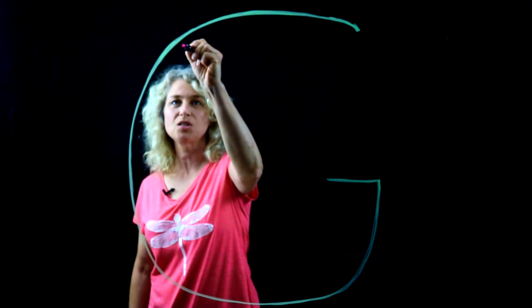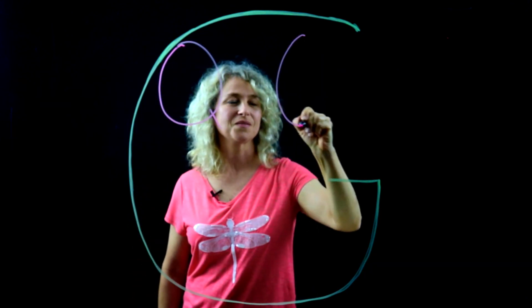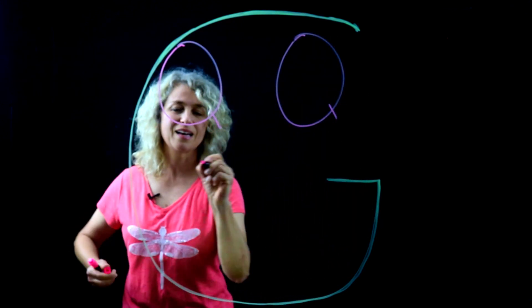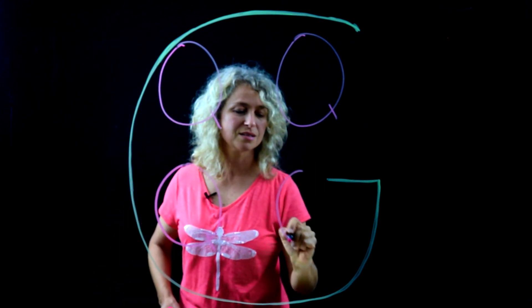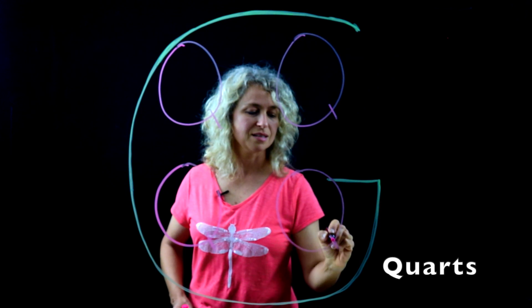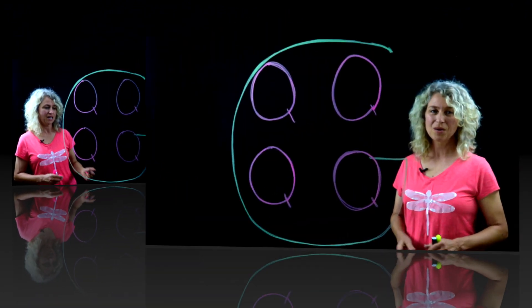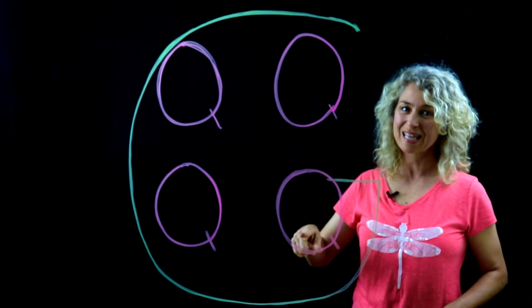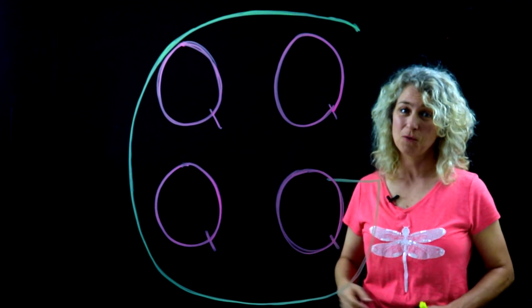If you watch this demonstration, there are going to be some letters inside here. These Q's stand for quarts. There are four Q's inside of the G. The Q stands for quarts, and there are four quarts in a gallon.